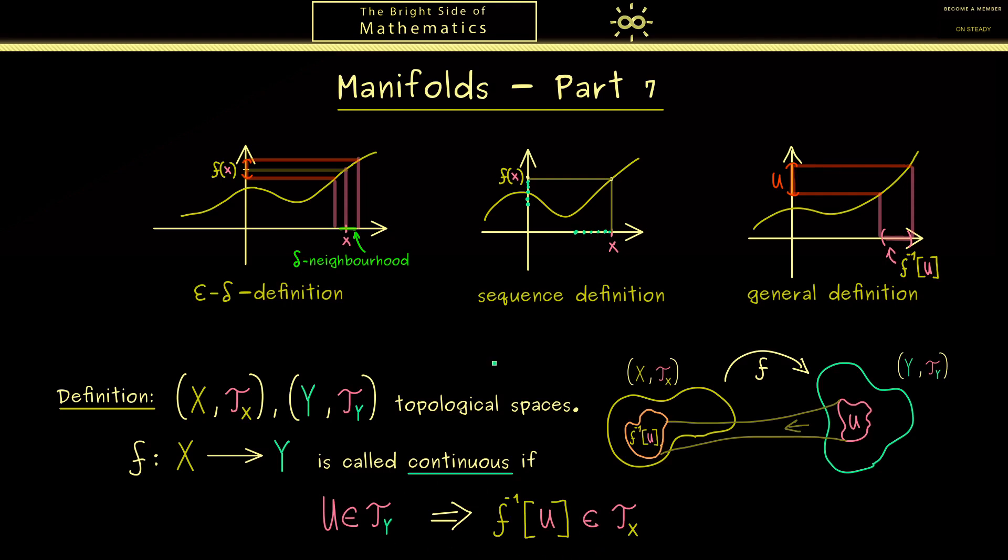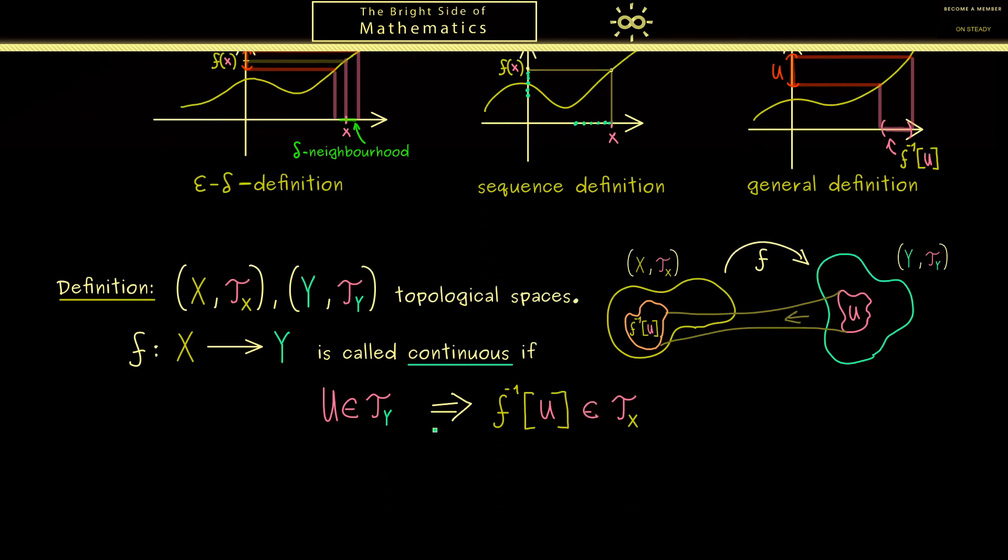I think in addition I should also tell you about another important notion in topology. And this is a so-called homeomorphism. And this simply tells us that the structure of the topological space is conserved in both directions.